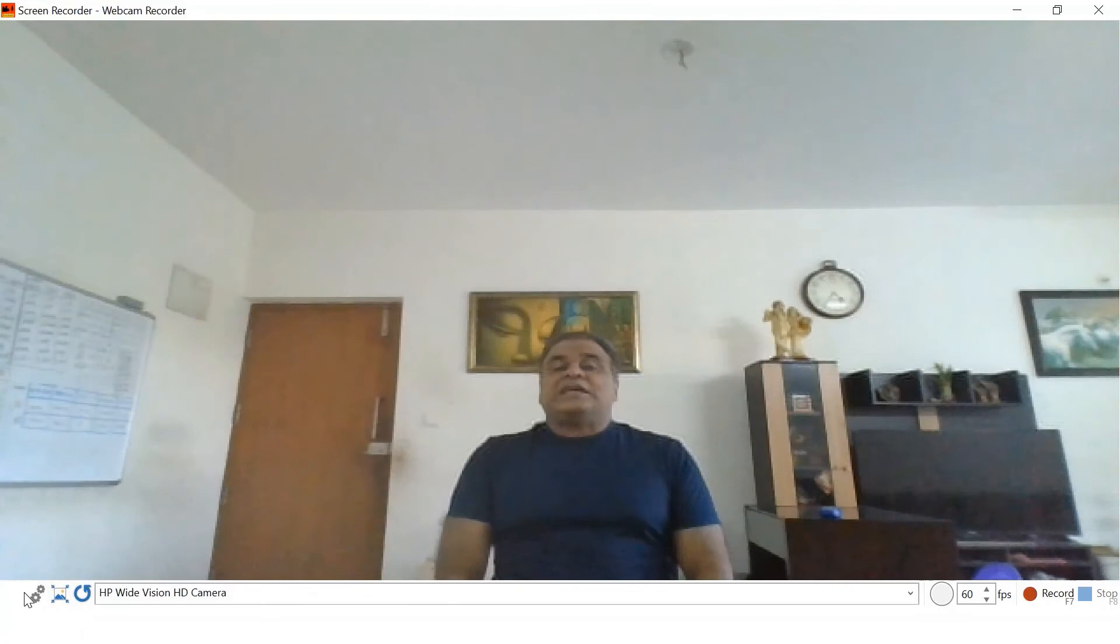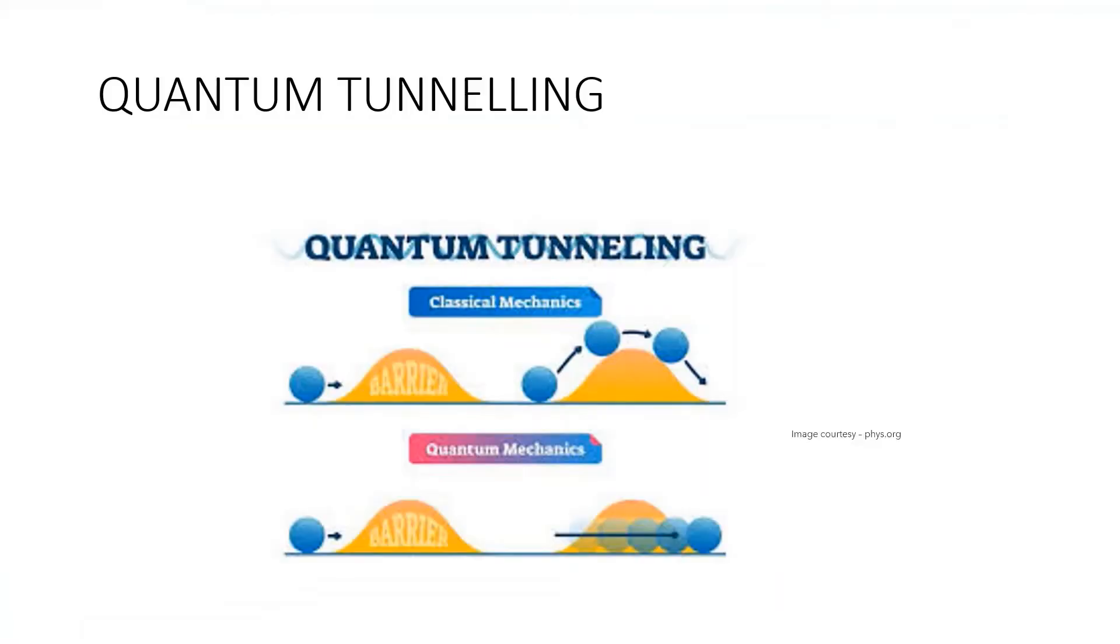The second example I have given is quantum tunneling. Quantum tunneling is a phenomenon in which particles penetrate a potential energy barrier with a height greater than the total energy of the particles. Quantum tunneling is the quantum mechanical phenomenon where a wave function can propagate through a potential barrier.